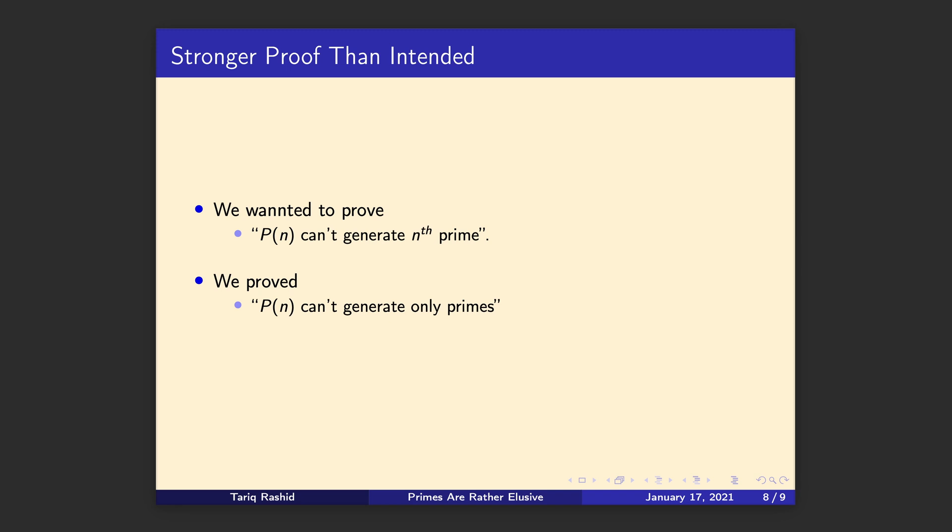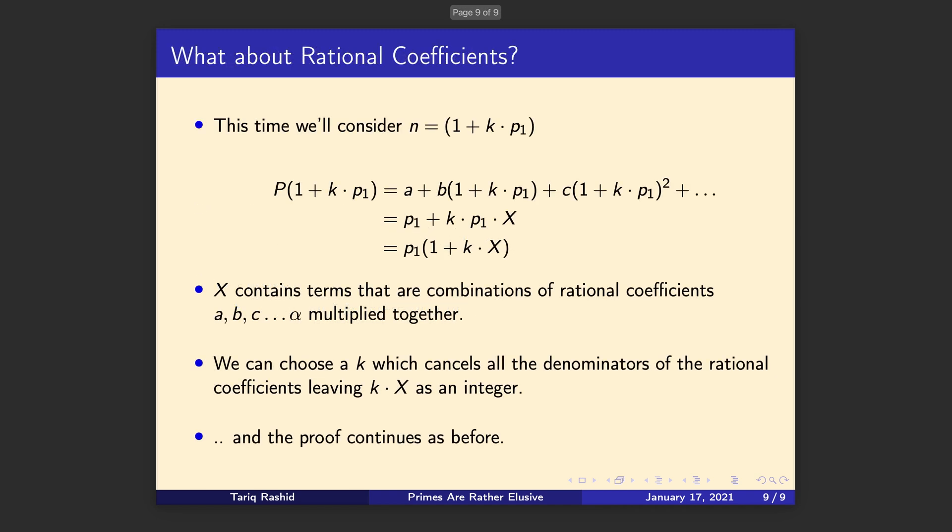So let's recap and think a little bit about what we've done. We wanted to prove that a polynomial, a simple polynomial with whole number coefficients and a finite list of terms, can't generate the nth prime and we proved that. But actually we proved that P(n) can't generate only primes and that's a stronger statement. So we started by saying can P(n) generate the nth prime. Our strongest conclusion is a polynomial can't generate only primes in any order. So what we've proved is just a little bit stronger, a bit wider than what we originally needed or wanted to prove. So that's a stronger proof than we intended. Fantastic.